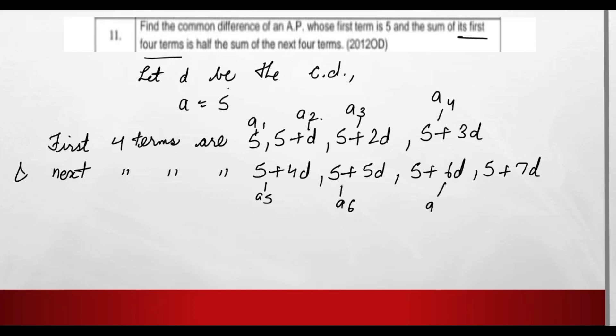Now according to question, sum of its first four terms, it means 5 + (5+d) + (5+2d) + (5+3d) is equals to half the sum of next four.